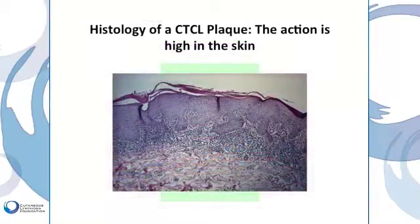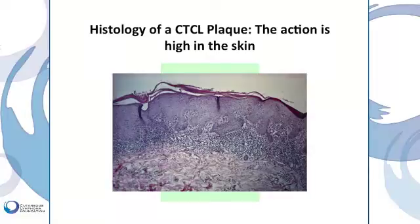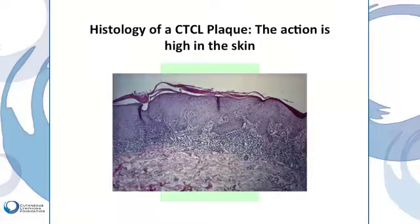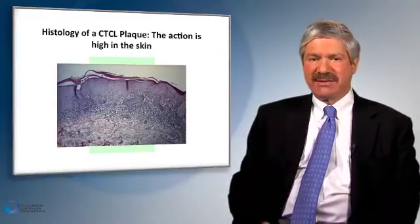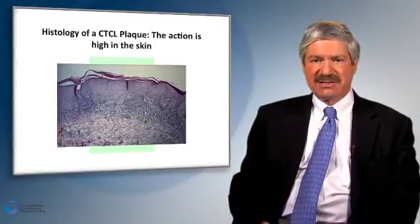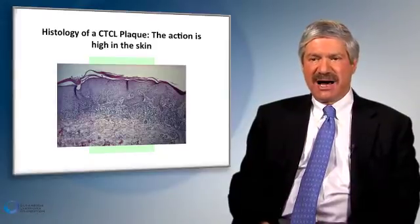When we look at a skin biopsy from the average patient with cutaneous T-cell lymphoma, we observe active T-cells in the upper layers of the dermis crowding up against the epidermis, the upper layer of the skin, and entering into the epidermis. The pathologic action — where we find the abnormal T-cells in mycosis fungoides and Sézary syndrome — is located high up in the skin.